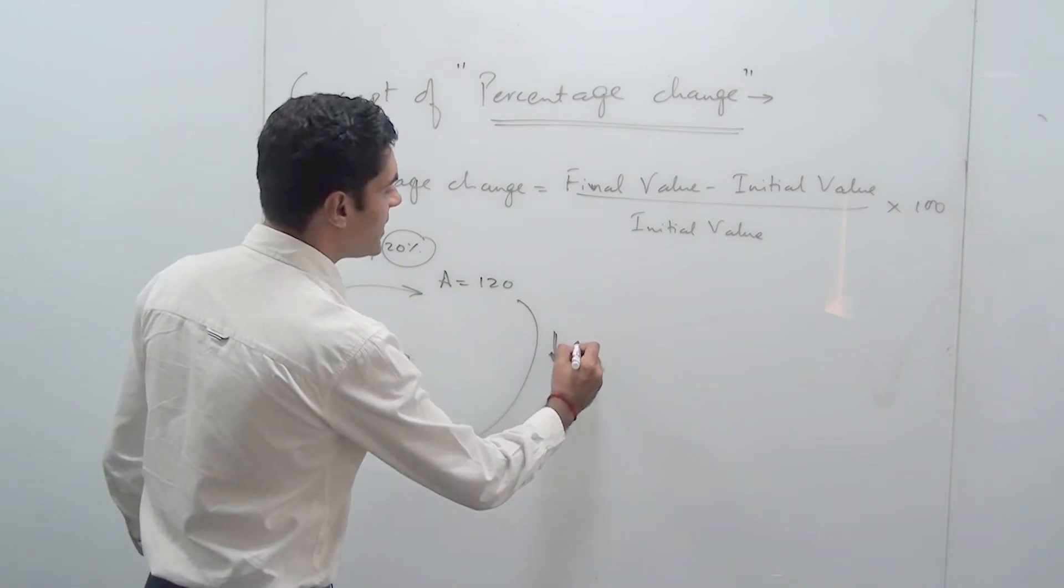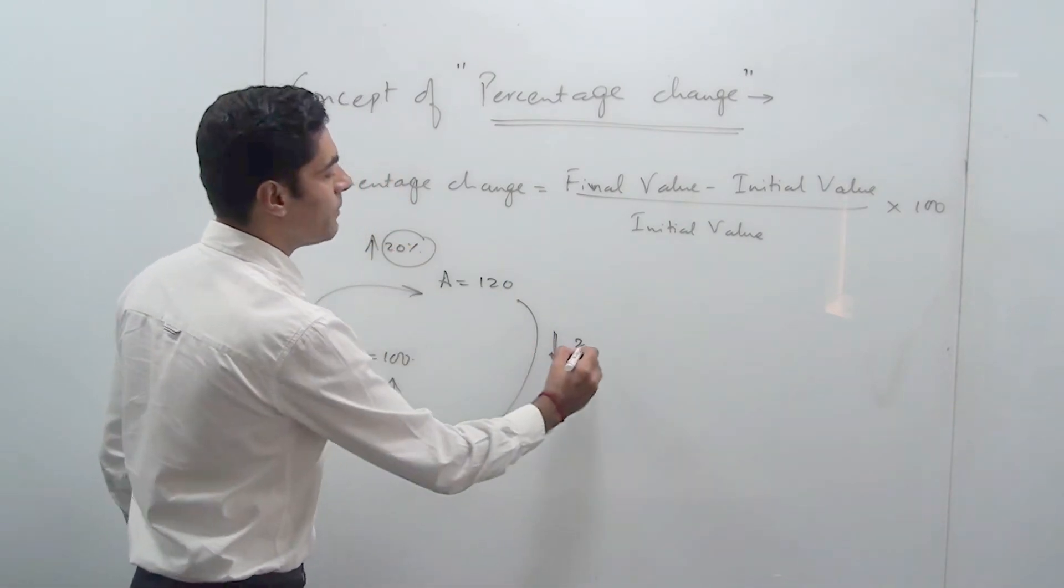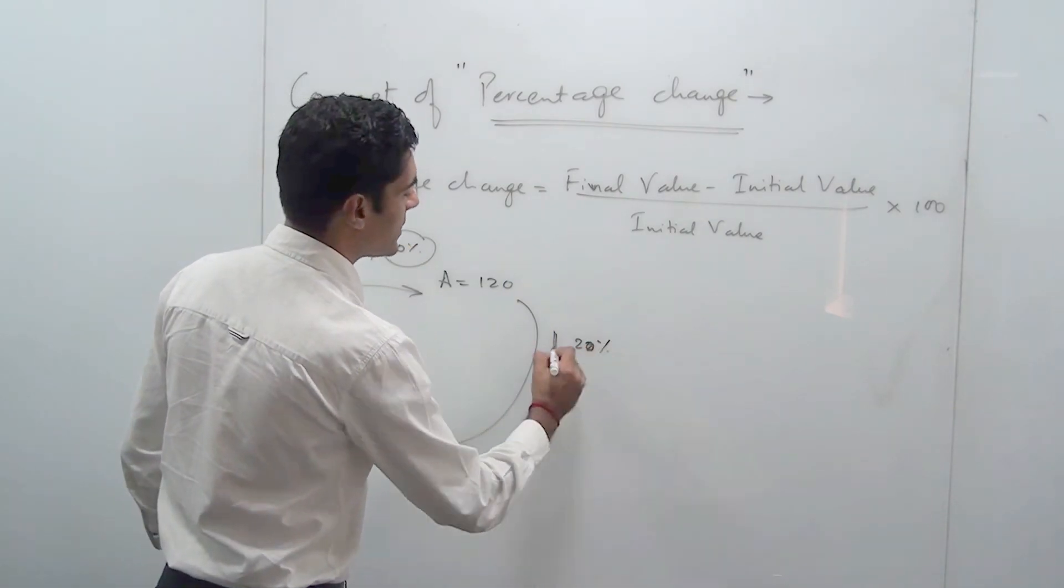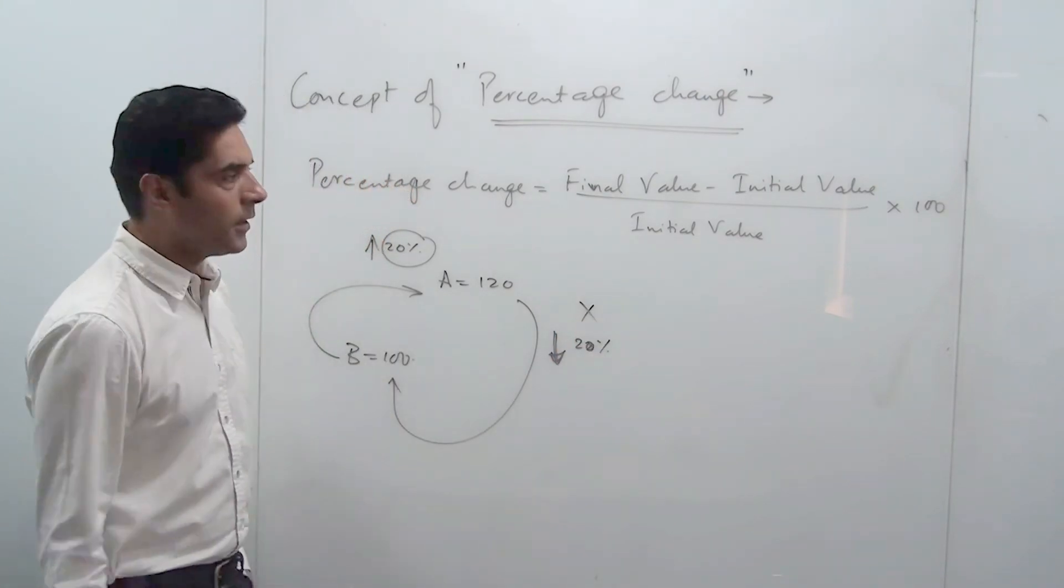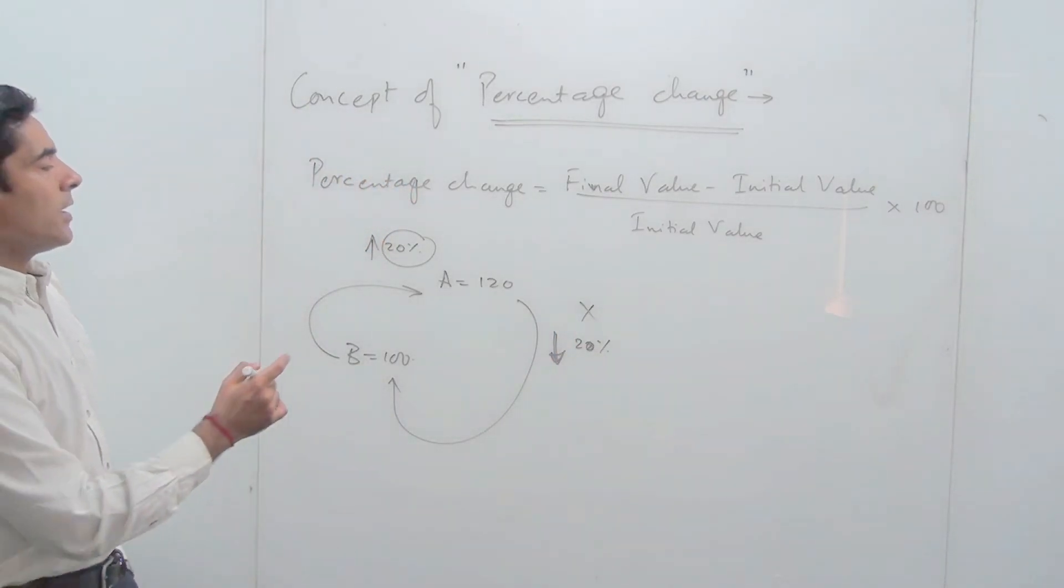But if I ask you that B is how much percent less than A, then you cannot directly say that if A is 20% more than B then B is 20% less. That is going to be wrong.